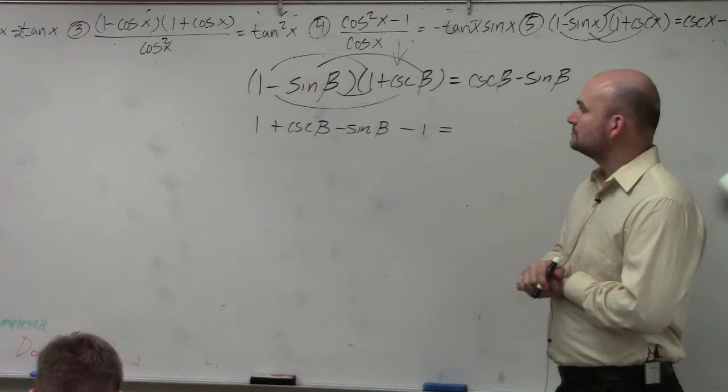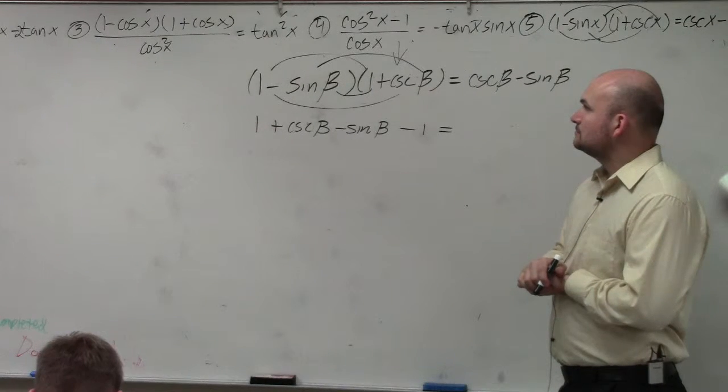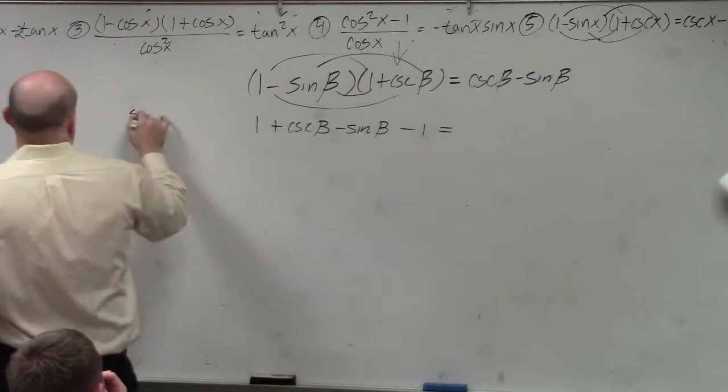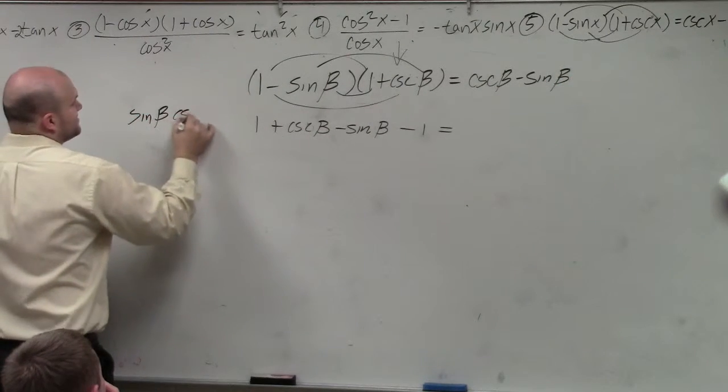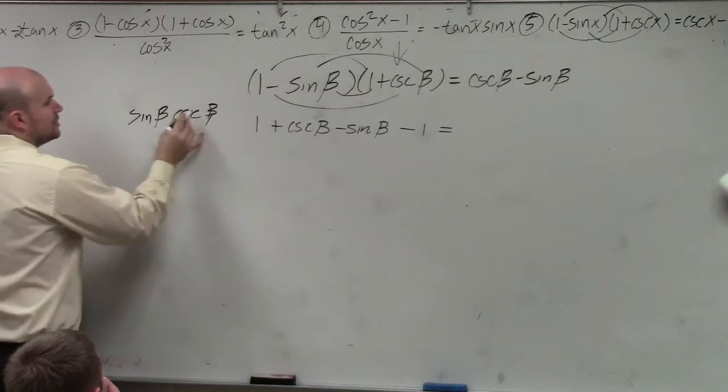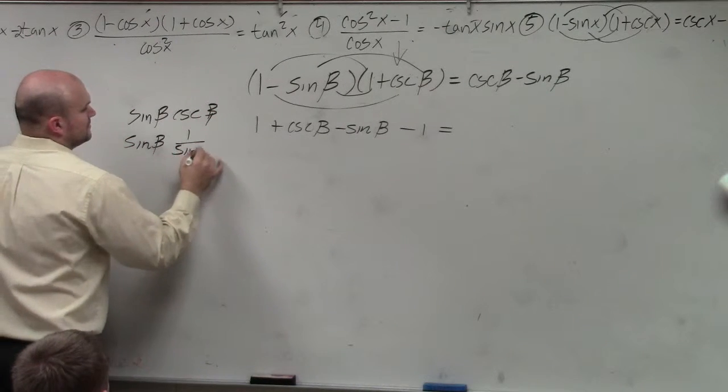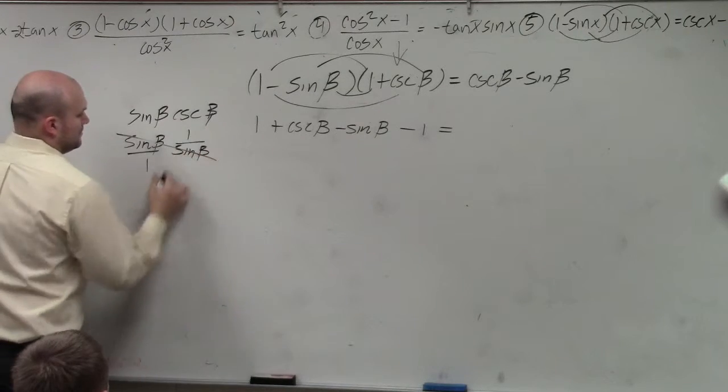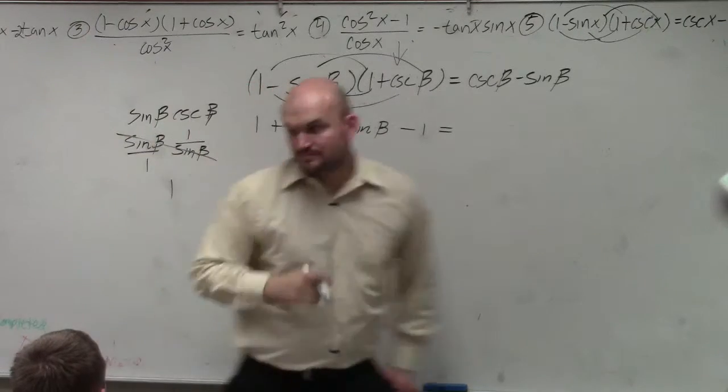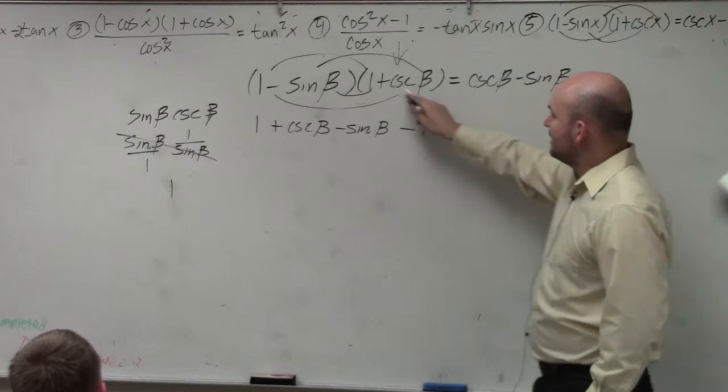Wouldn't there be like sine of beta times cosecant of beta? Yes. Sine of beta times cosecant of beta. Cosecant of beta is the reciprocal of sine of beta. So it's 1. That's why I wrote 1 there.